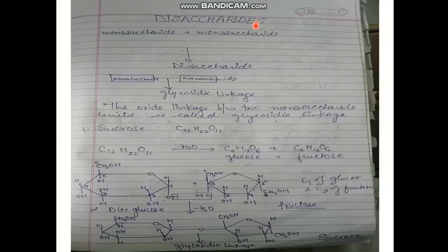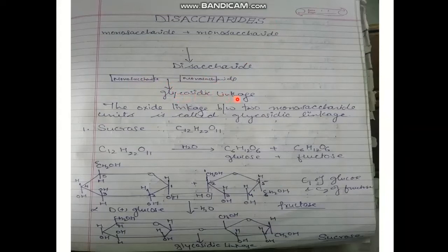Now we are going to start disaccharides. Disaccharides on hydrolysis give a number of monosaccharide units. Two monosaccharide units combined together give rise to disaccharides, which come under the category of oligosaccharides. The monosaccharides acting as monomer units are linked by glycosidic linkage — an oxygen linkage between the monosaccharide units.